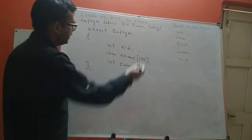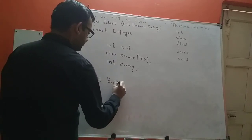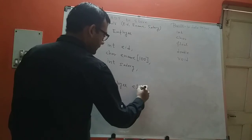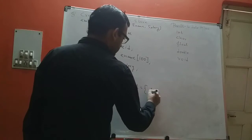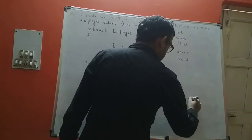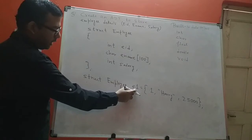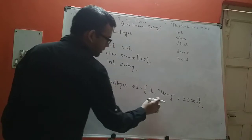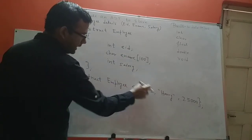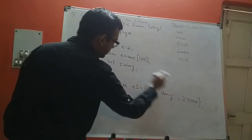This will create my abstract data type. Now I can create a variable of this data type. I write struct employee — struct employee represents the data type — and then I give the name of the variable, let's say E1. I'll assign it values directly: 1, Harry, salary of 25,000. So E1 has EID of 1, E-Name of Harry, and salary of 25,000.